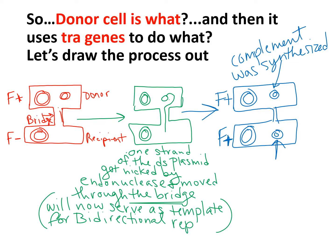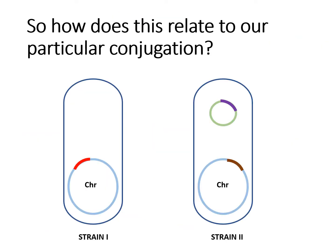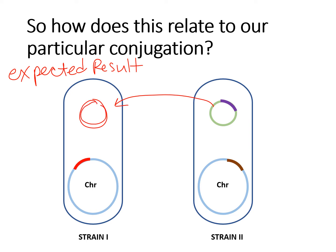If you have any questions about any part of this diagram or the process, send me a message in the Remind app. So the expected result: you expect strain two to have given strain one its plasmid. That would give strain one amp resistance in addition to the strep resistance it already has. But what doesn't it have? It does not have NAL resistance — that was chromosomal DNA in strain two and never got transferred, because only the plasmid could get transferred. It does not have transferability.